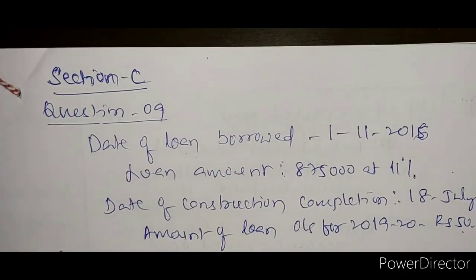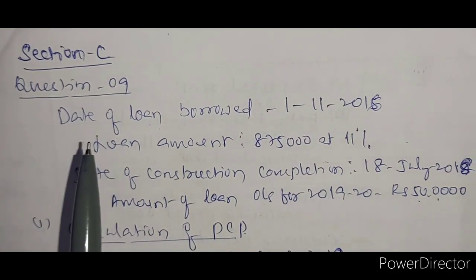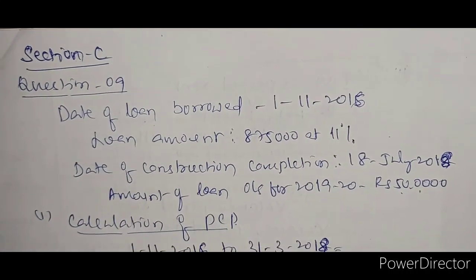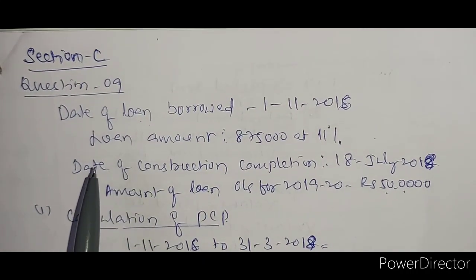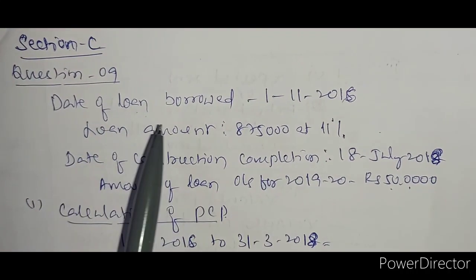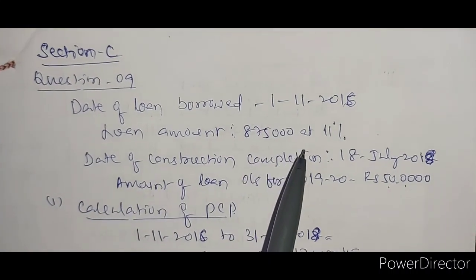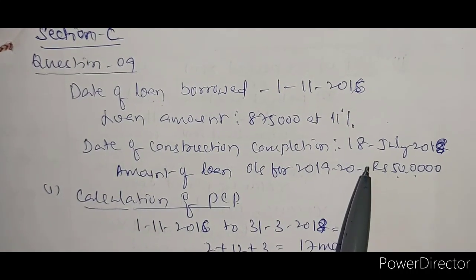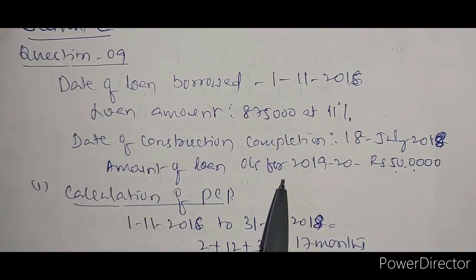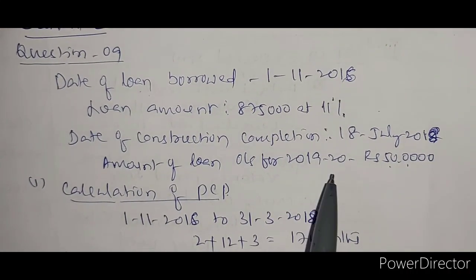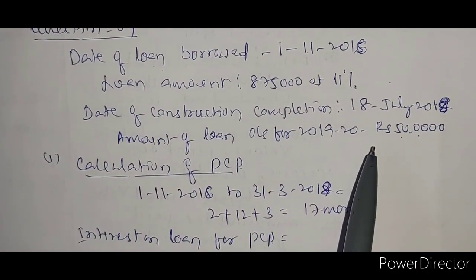In Section C, we calculate interest on loan for the pre-construction period (PCP). The loan was borrowed on 1st November 2016, loan amount eight lakh seventy five thousand at 11 percent interest. Date of construction completion is 18th July 2018. The loan outstanding for 2019-20 is five lakh rupees.